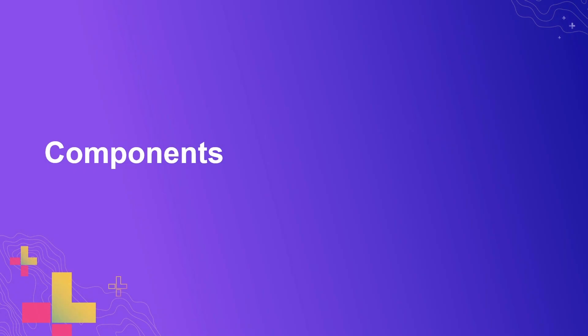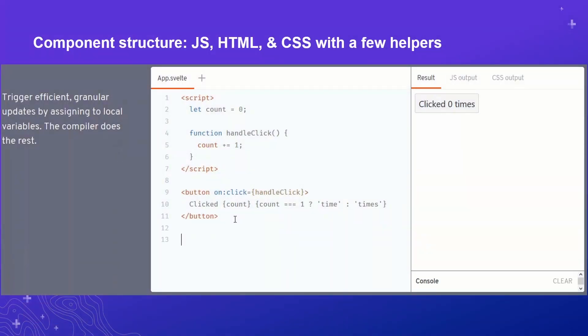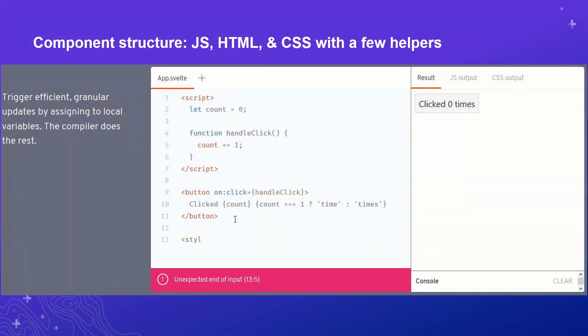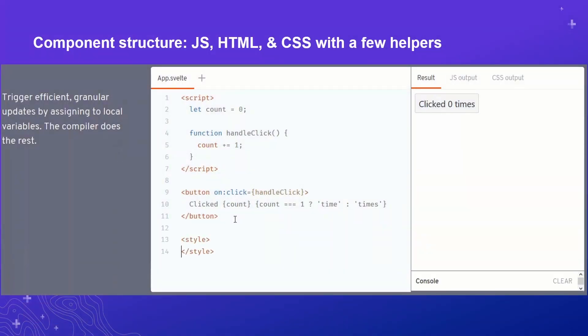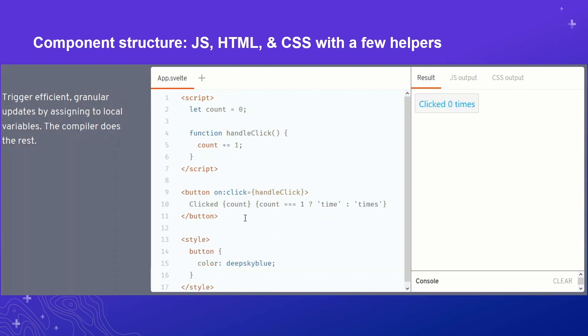Let's dive right in and investigate the structure of a component in Svelte. A Svelte component typically ends in a .svelte file extension, which really is an HTML document. It can have JavaScript, HTML, and CSS with a few extra Svelte helpers. Beginning on line one, we have a script tag, and this is where our JavaScript lives.